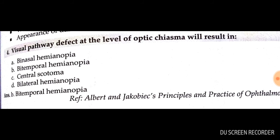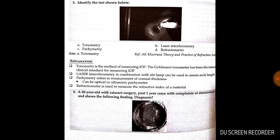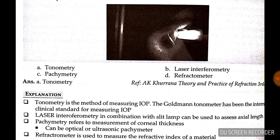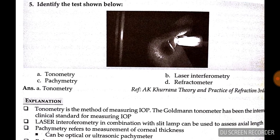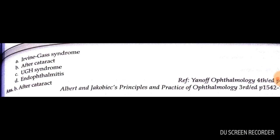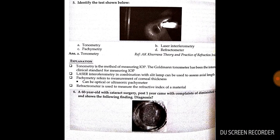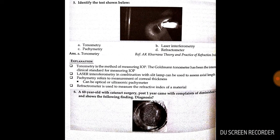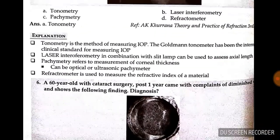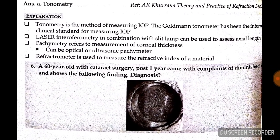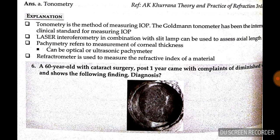Question number 4: visual pathway defect at the level of the optic chiasma will result in bitemporal hemianopia. Question number 5: identify the test shown below — it is tonometry, option A is correct.